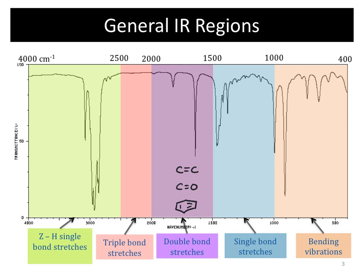The 2,000 to 2,500 region is where you're going to see triple bonds — carbon-carbon or carbon-nitrogen triple bonds. Then 2,500 to 3,000, we're going to see things like C-H, N-H, and O-H stretches.